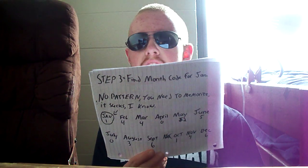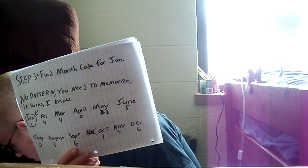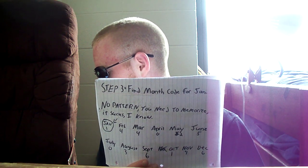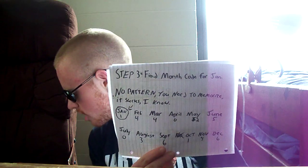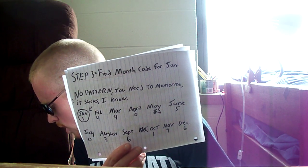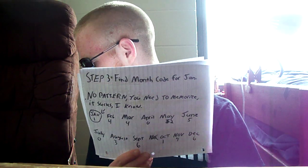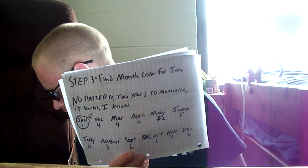September is 6. 'Sept' means 6 in some language, so that might help you. October is 1. Think of 'Octo-tub' — if you have a house, there's usually only one bathtub. November is 4. Think of a stove top — there are usually four burners where you can put pots. December is 6 — it's the last month.